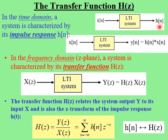The impulse response is important because with it, we can figure out how the system will behave or what output it will produce for any input sequence, X of n. For example, if we put the sequence X of n into an LTI system, the output of the system, Y of n, is given by the convolution sum of H of n and X of n.